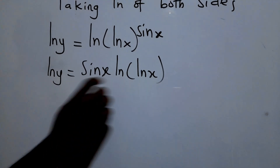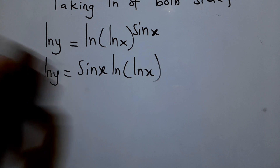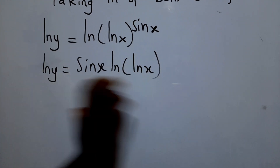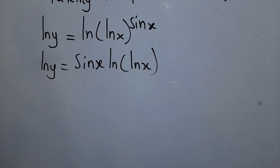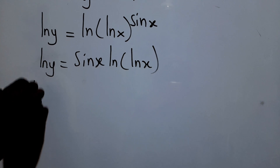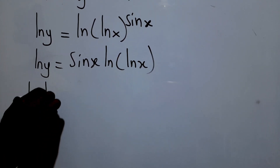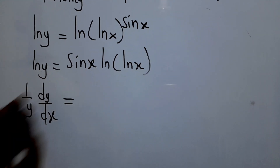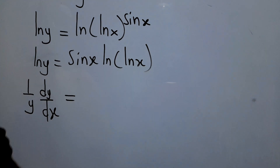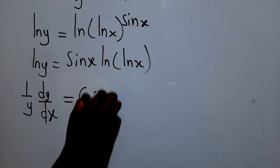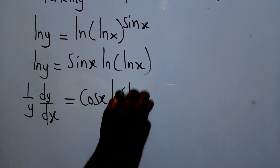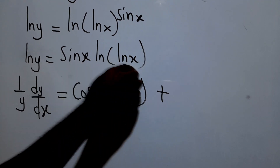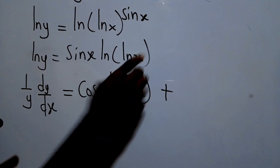We can now differentiate this using the product rule through implicit differentiation to get our result. The differential of the left side will be one over y — because it's implicit, we attach the derivative to it — and on the right side, we differentiate sin(x) and keep ln(ln(x)), giving cos(x) times ln(ln(x)).